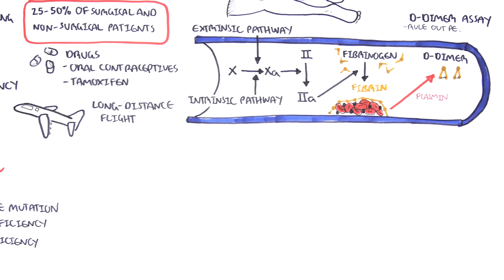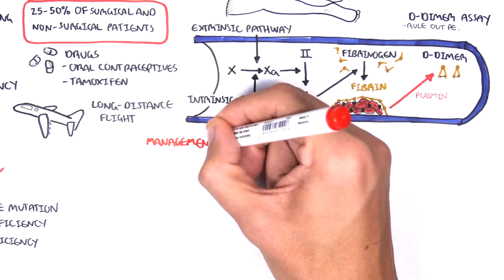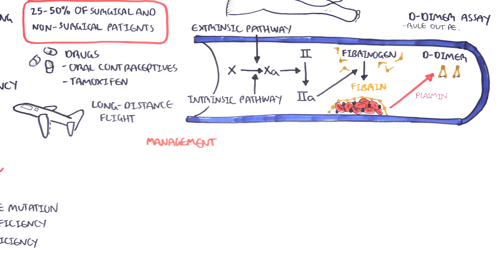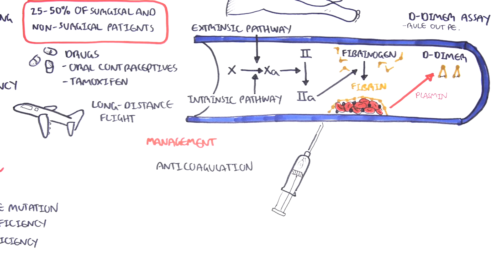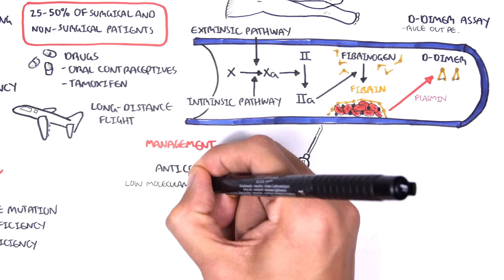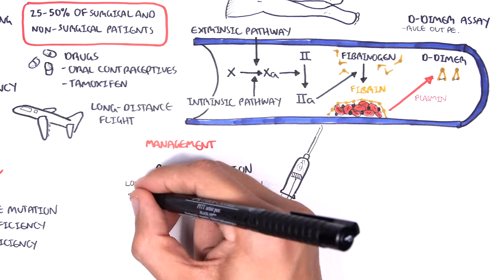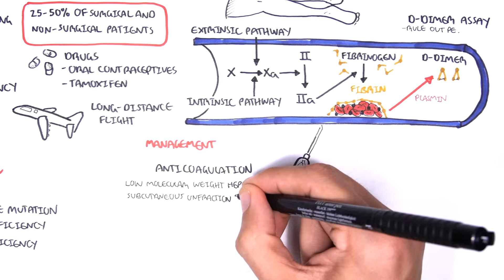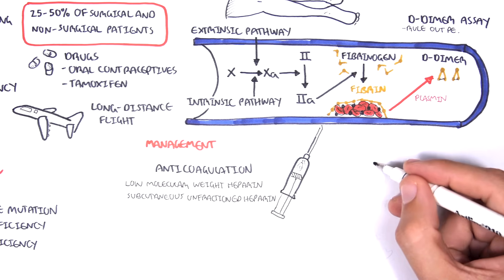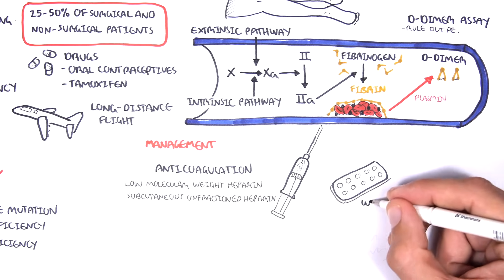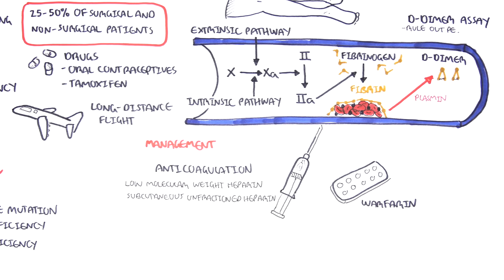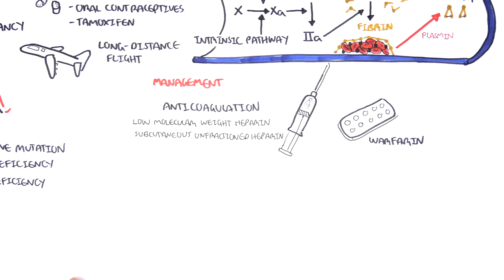Let's move on to management which is mainly anticoagulants. Essentially the anticoagulants include heparin and there are two types of heparin that can be given. Low molecular weight heparin which is given IV or subcutaneous unfractured heparin. Warfarin is given orally and needs maintenance through INR measurement. Essentially heparin and warfarin target some pathways within the clotting cascade, mainly the common pathway.